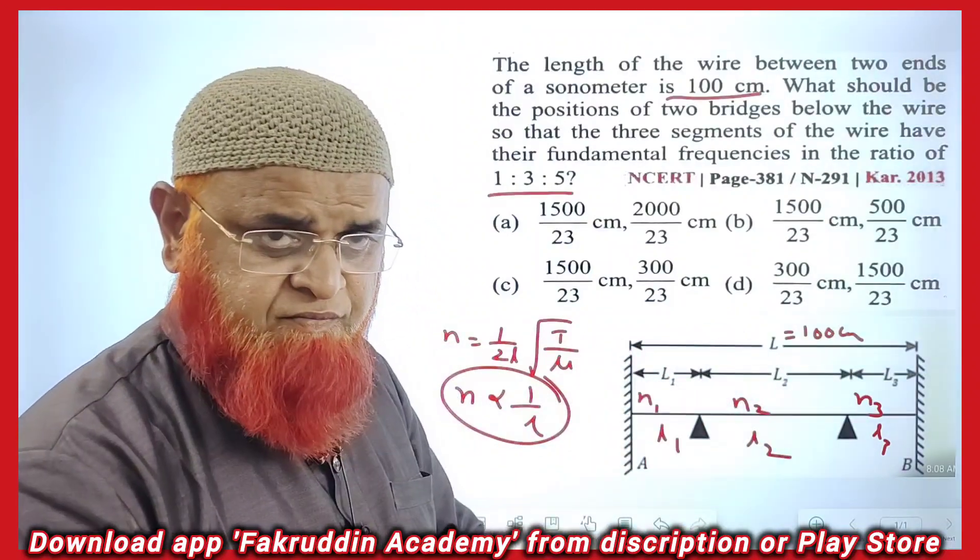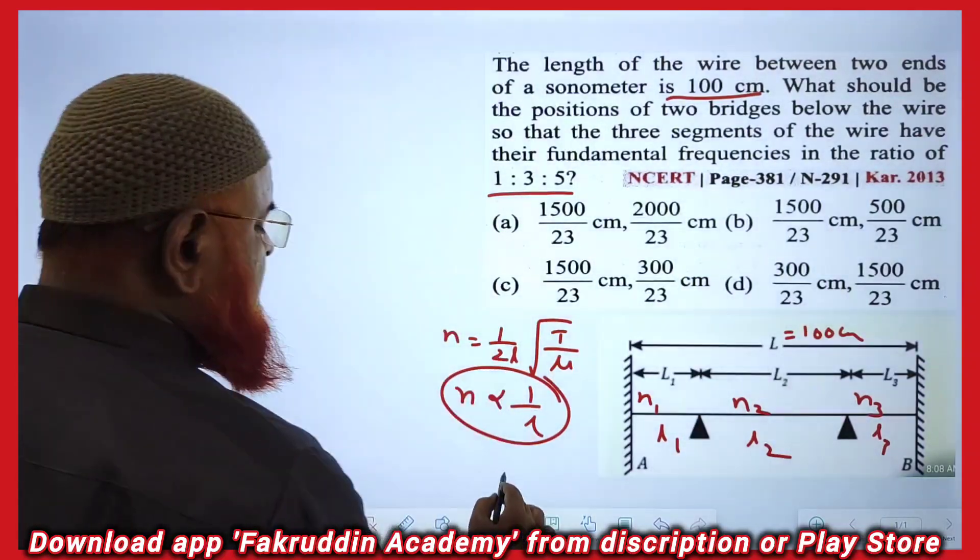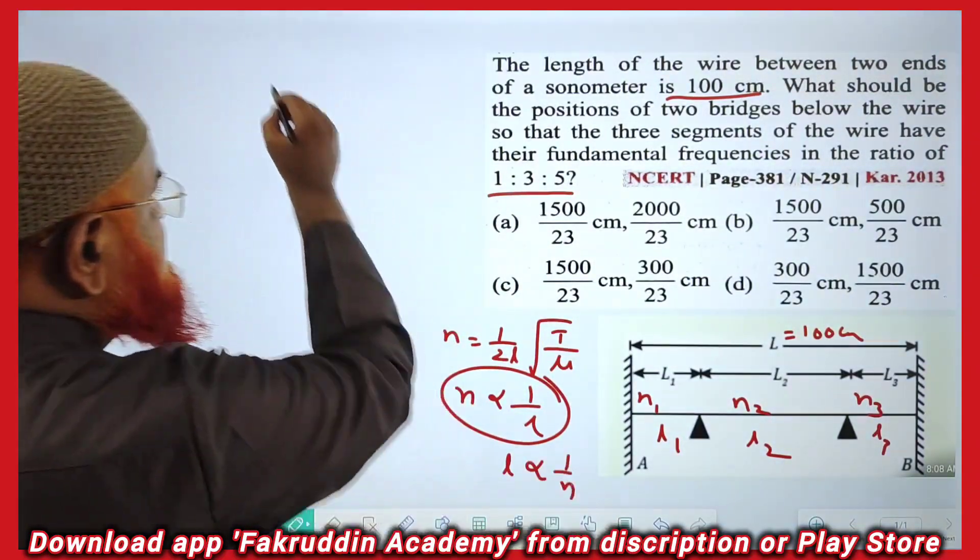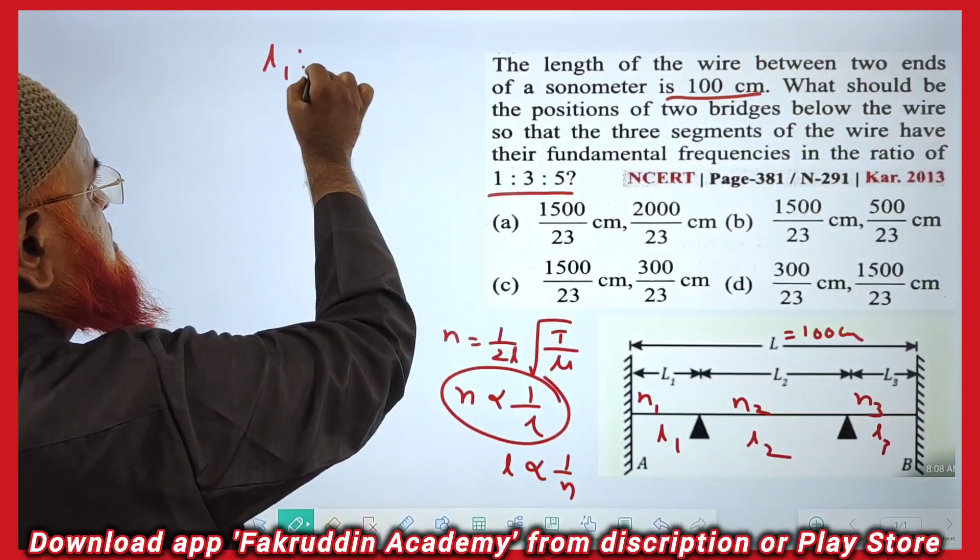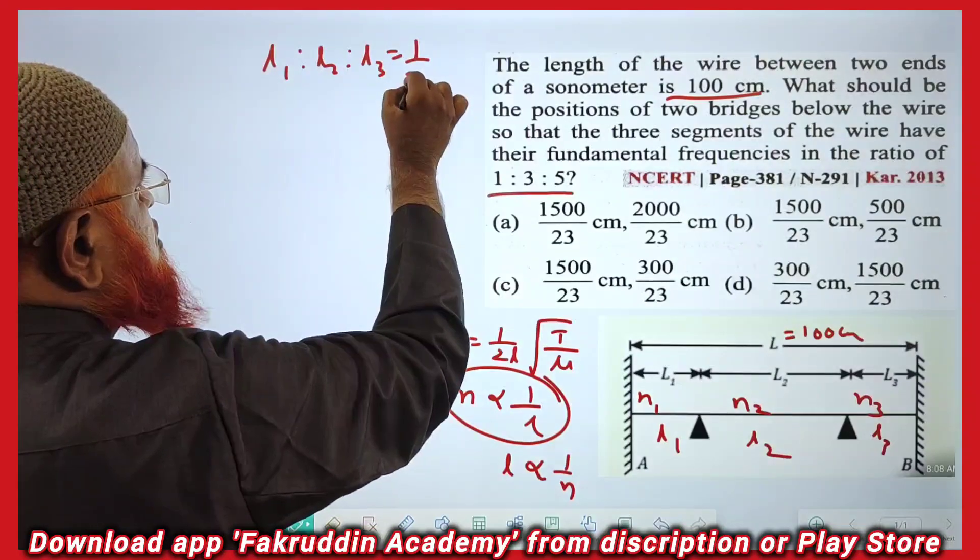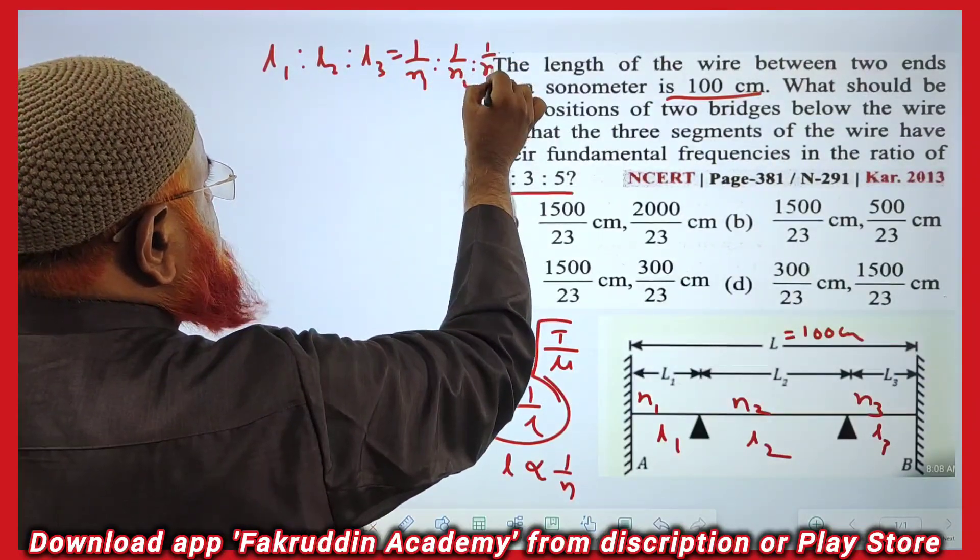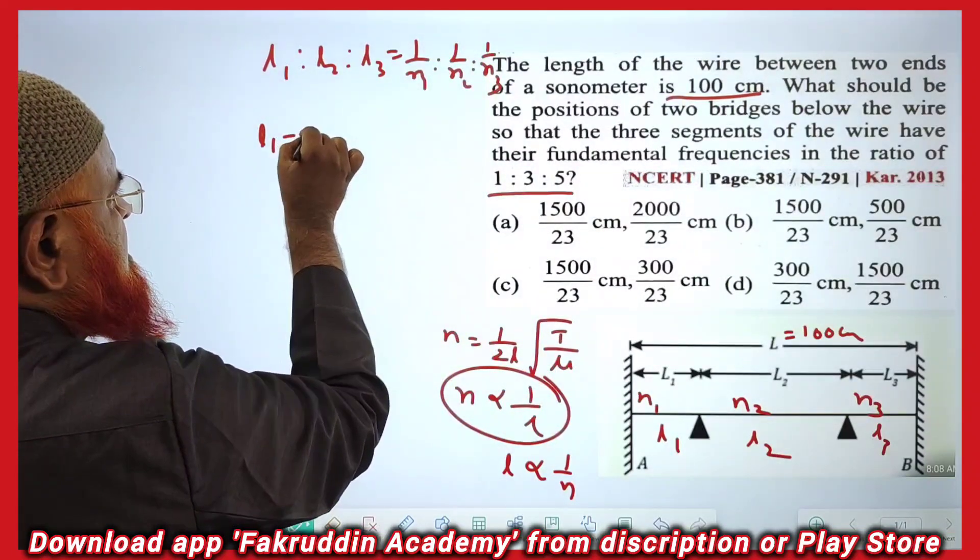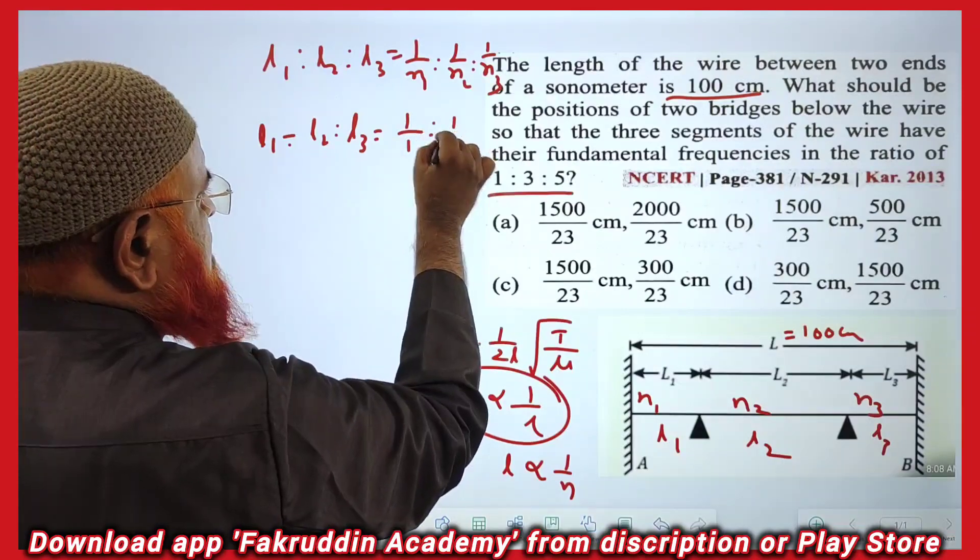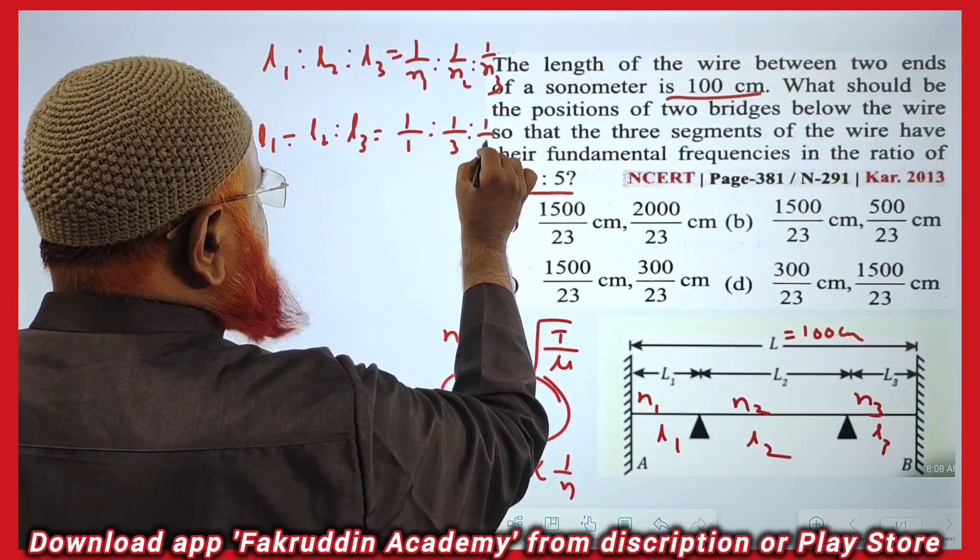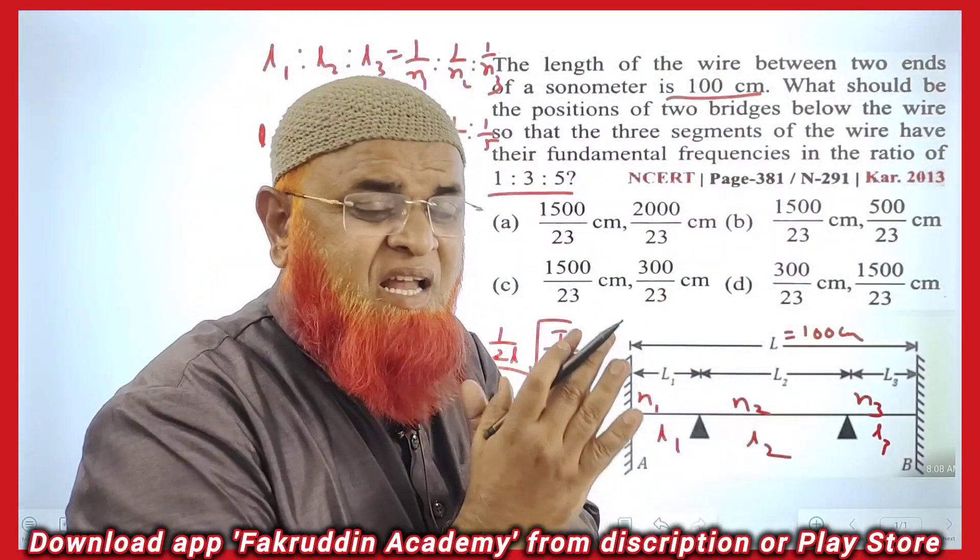What are the length ratios? We shall discuss here. Length is inversely proportional to frequency. That means L1:L2:L3 = 1/N1:1/N2:1/N3, which is nothing but L1:L2:L3 = 1/1:1/3:1/5. You have to make this reciprocal. The ratios are in the form of fractions, so we have to take the proper ratios here.